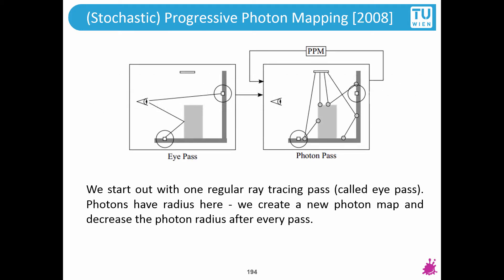We start with a regular ray tracing pass called the eye pass, use the current photon map, then generate a new photon map to use for the next pass. There is also an addition: you start out with bigger photons, and the radius of these photons shrinks over time.